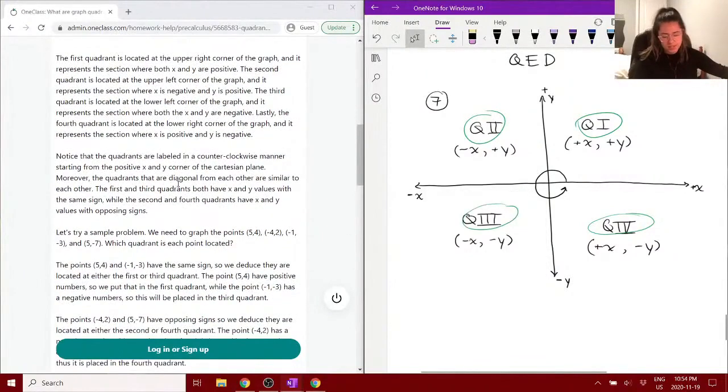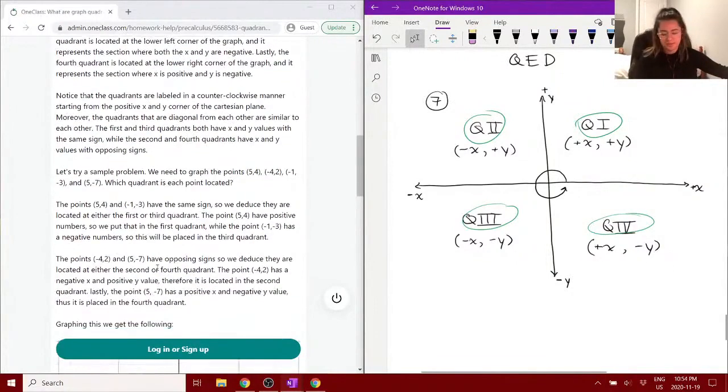And then we also notice, it says here that when quadrants are diagonal from each other, they are similar, as in we both have the same sign. So, this one has two of the same signs here, this has two of the same signs, and then these across from each other, we have one negative and one positive, one positive, one negative, same thing. Okay?